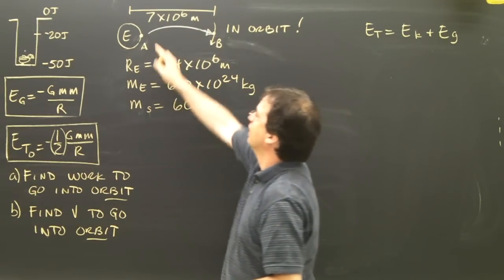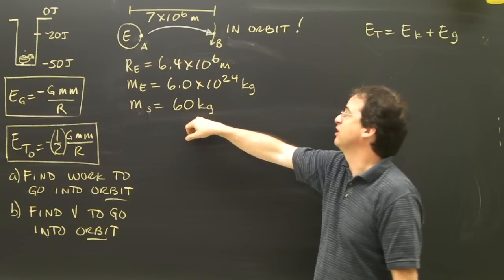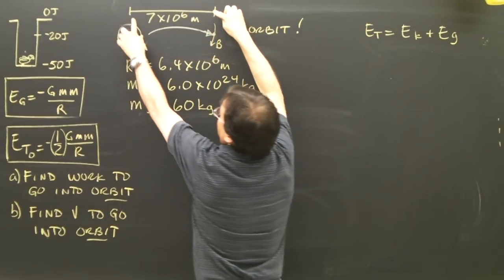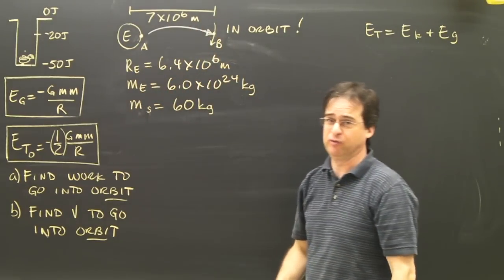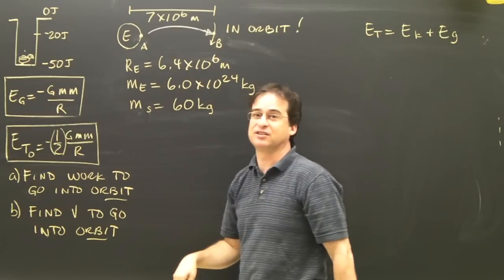So this is what I've got. I've got an object on the surface of the Earth. This time the mass of the object is 60 kilograms, not 50 kilograms. I've taken the object up to this height and I've given you that distance relative to the center of the Earth, which is what you need. So not an altitude, I've given it to you right from the center. It's 7 times 10 to the 6 meters.